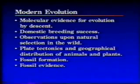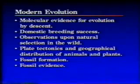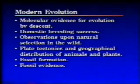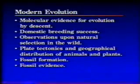We can see to what extent organisms share genomes and where they differ. When you do this for humans and chimpanzees, by a variety of techniques using different parts of the genome, we can see that they share some 99% of their genome. Domestic breeding has had tremendous success in the 20th century. Observations upon natural selection in the wild have been carried out largely since 1950. Plate tectonics has also shown us a lot about the movement of plates on Earth's surface and helped us understand geographical distributions of animals and plants, both living and fossil.